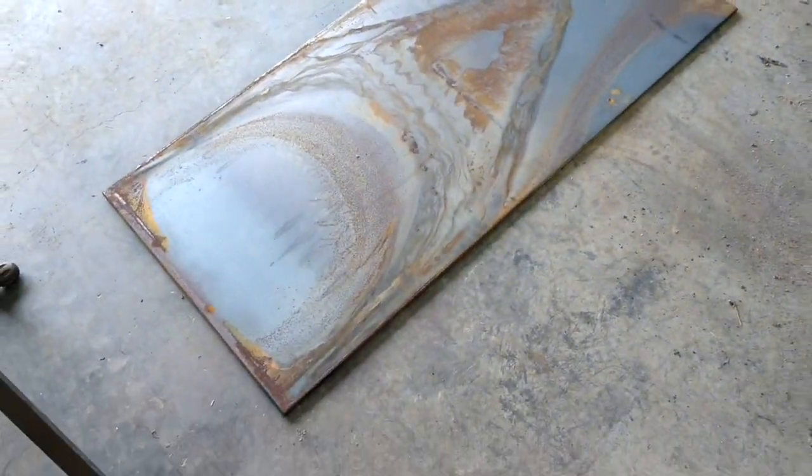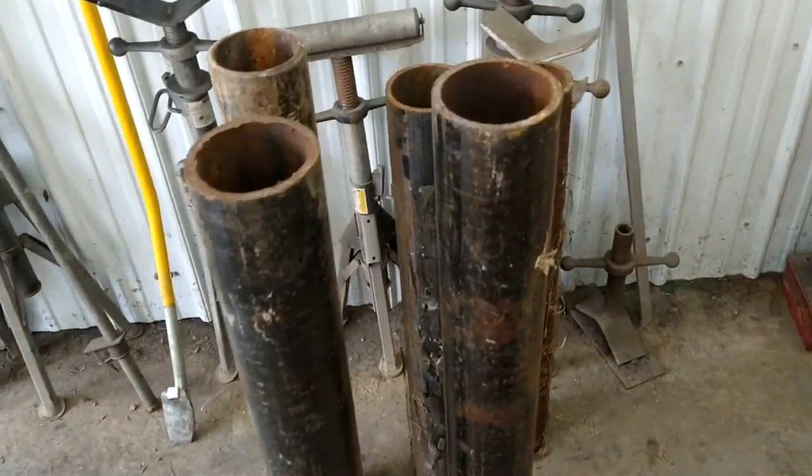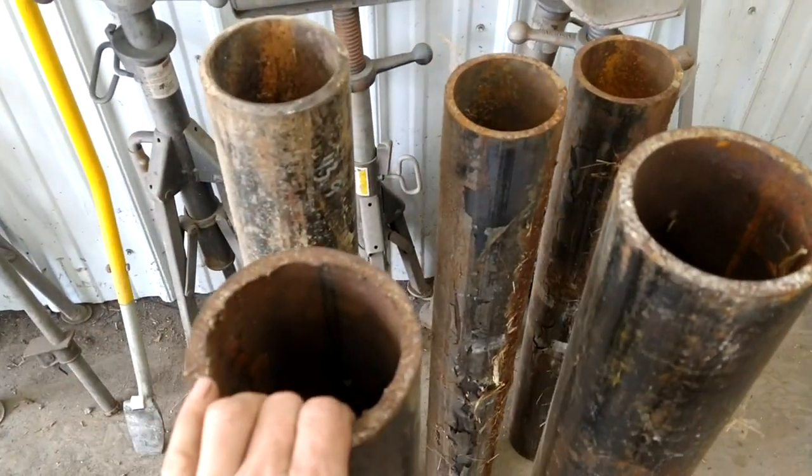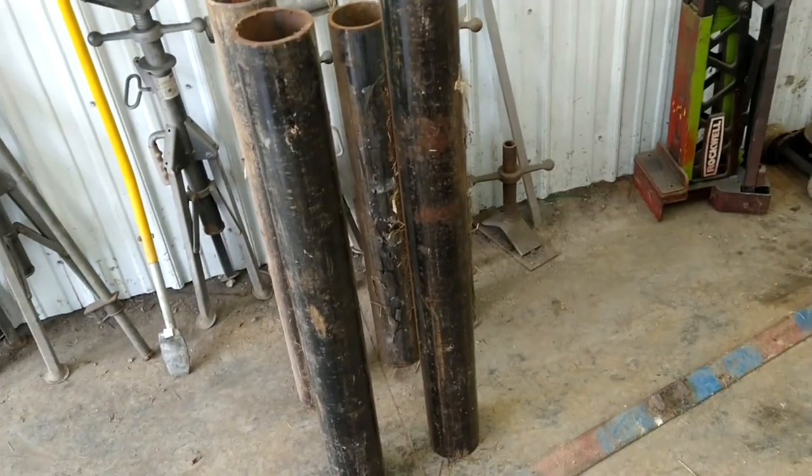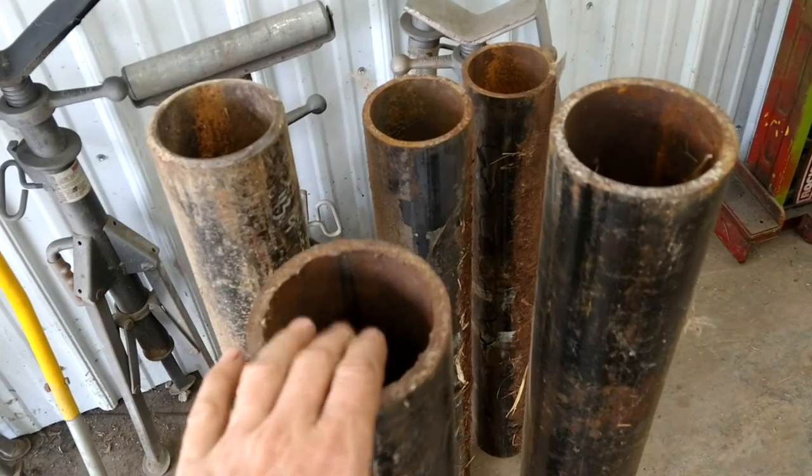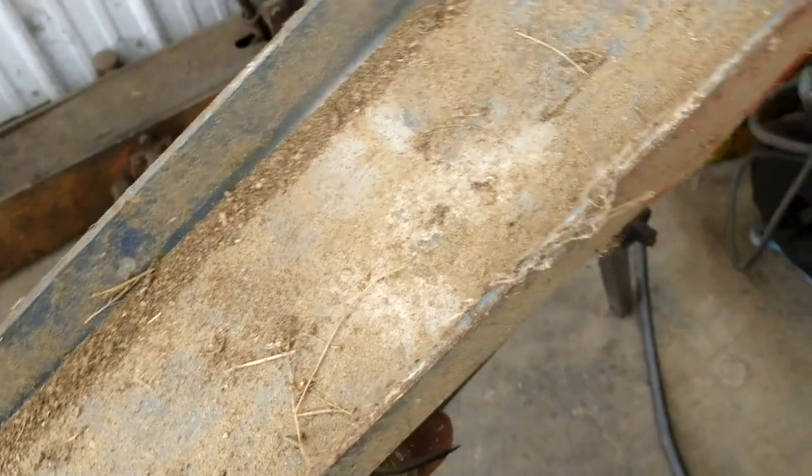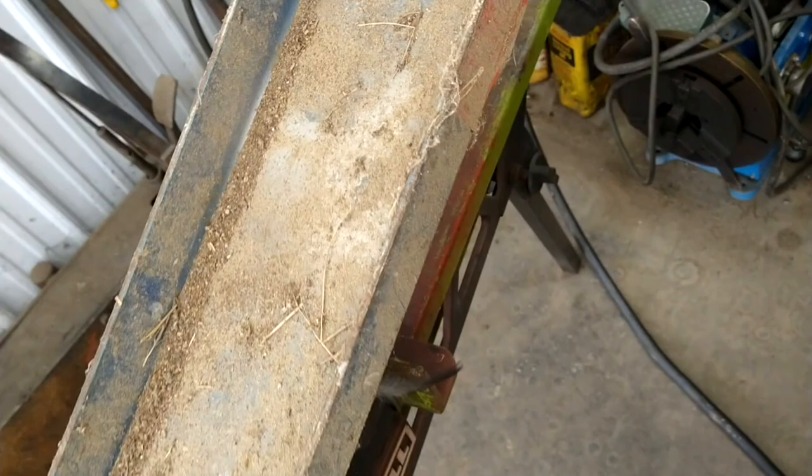So you can make the legs out of whatever you want. You would never buy 4 inch schedule 80 to make a workbench this small out of but that's what I have. So that's what we're going to use. If you were going to actually buy stuff you'd probably buy square tubing, it's easier to work with. And I'm going to use this channel for the frame underneath the table. And again you would never use channel iron this big. I think this is six or eight inch channel but I have it laying around so that's what's going to happen.